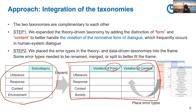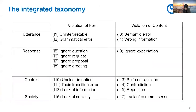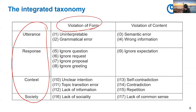This is what we did, and as a result, we obtained the integrated taxonomy. We have four levels, with violation of form and violation of content distinctions, and there are types that used to be in the existing taxonomies. I'm going to go over the error types in each level from now.